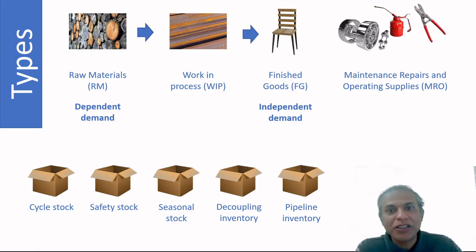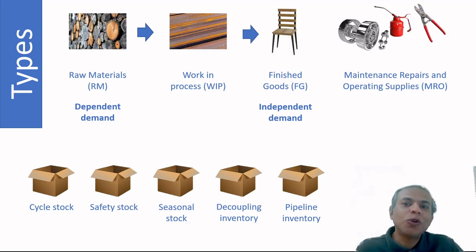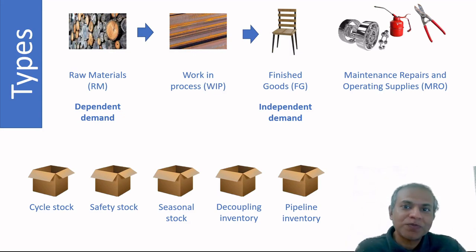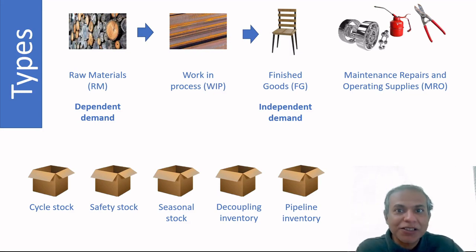Seasonal stock — also called anticipation inventory — is stock held for something known. For example, you know Christmas, Halloween, Diwali, or Ramadan will drive up demand for specific items, so you stock excess in advance. The key distinction: safety stock is for the unknown, while seasonal stock is a planned increase because you know demand is coming.